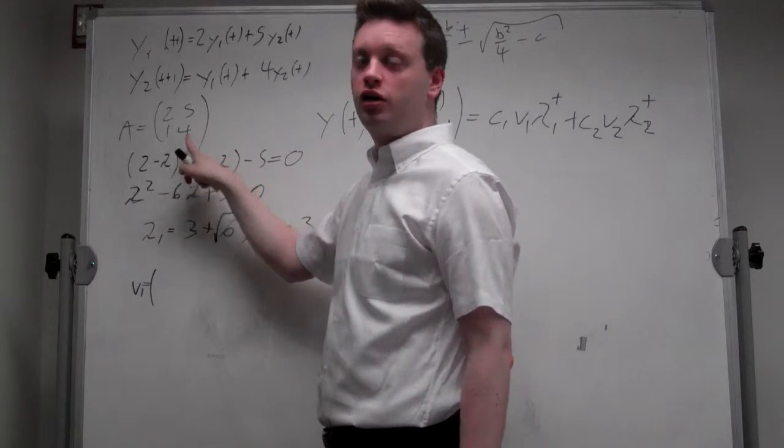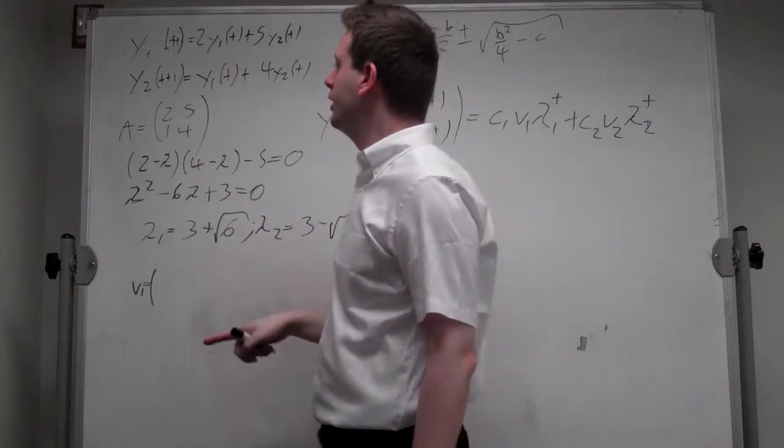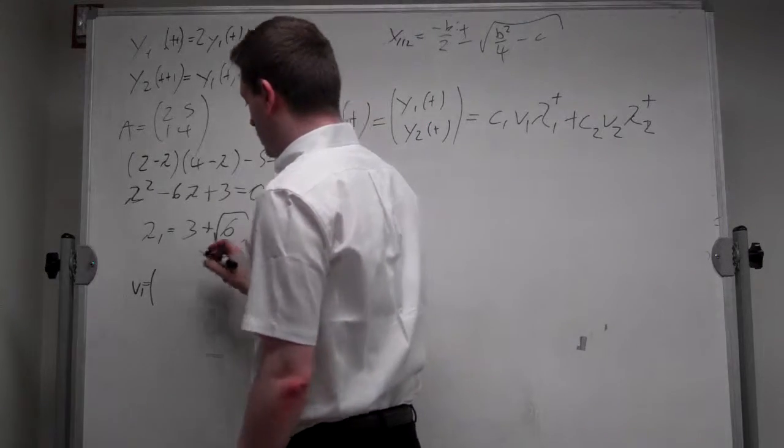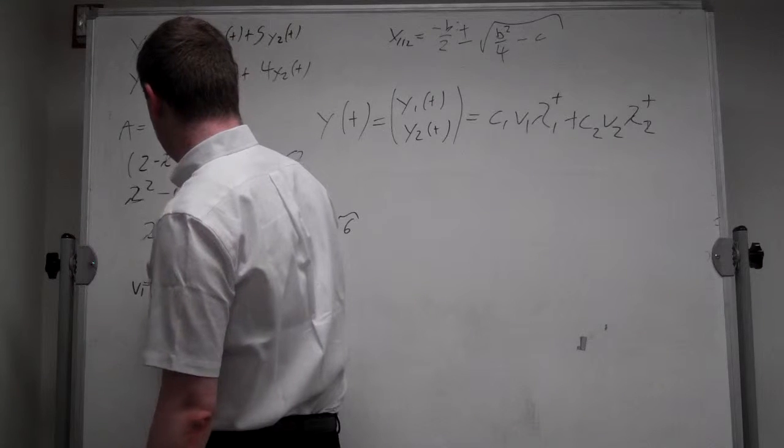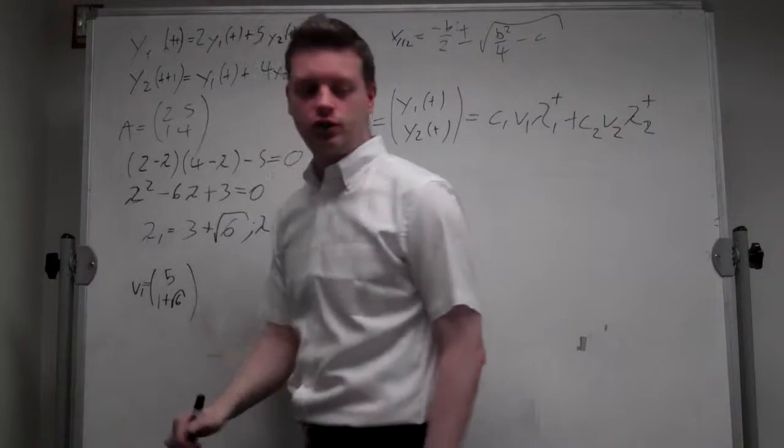And we can simply take the eigenvector 5, 1 plus square root of 6.